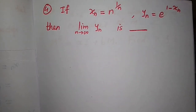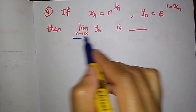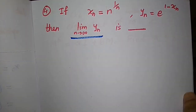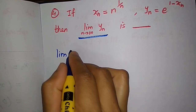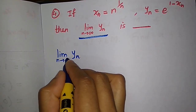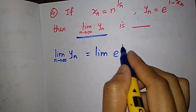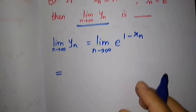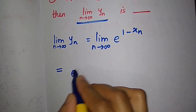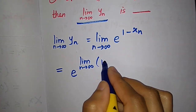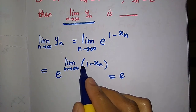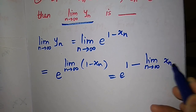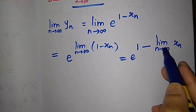Now let us solve another question. We have to find the limit of yₙ where yₙ = e^(1 - xₙ) and xₙ = n^(1/n). To find the limit of yₙ, write down the definition: yₙ = e^(1 - xₙ). By rules of limits, this equals e raised to the limit as n→∞ of (1 - xₙ), which is e^(1 - lim xₙ). So we need to find lim xₙ.